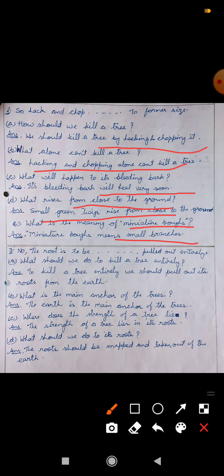Third para, third extract is: No, the root is to be pulled out, out of the anchoring earth. It is to be robed, tied and pulled out, snapped out or pulled out entirely. So, first question is, What should we do to kill a tree entirely? Kya karna chahe ye, ek peed ko poori tariqe se maar dhyalne ke liye? To kill a tree entirely, we should pull out its roots from the earth. Peed ko poori tariqe se maarne ke liye, hamei uski jadon ko earth se baahar kheech lena chahe ye. What is the main anchor of the trees? Anchor, usko jakar ke rakhne waali cheez, kawn hai peedon ki? The earth is the main anchor of the trees. Bina earth ke peedon ka, koi astitwa hi nahi hai.